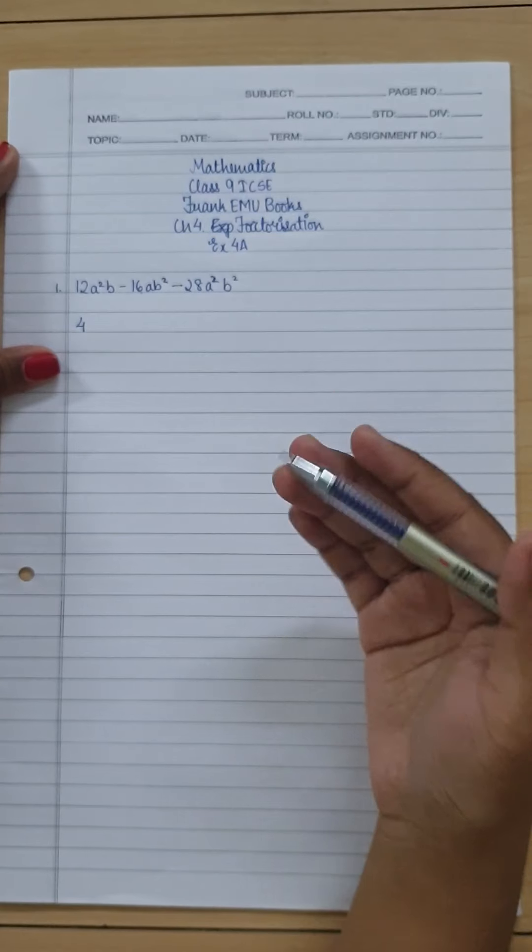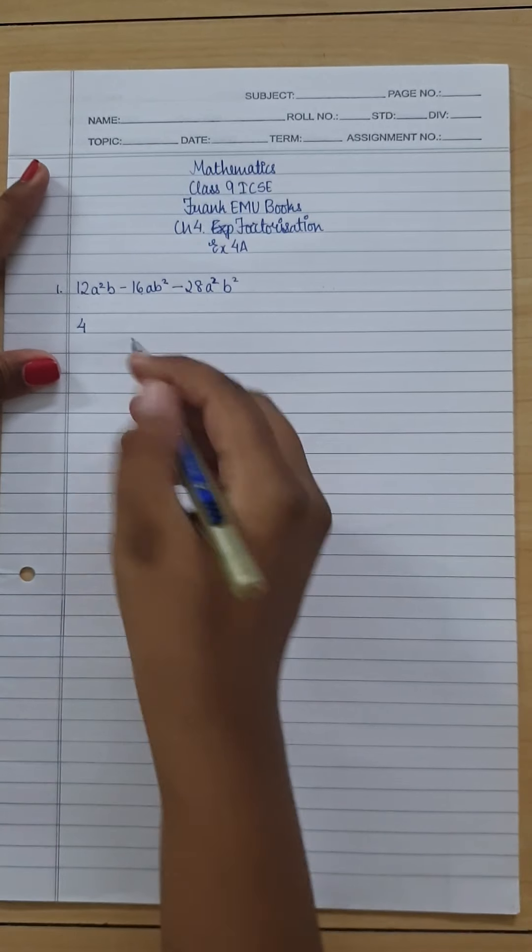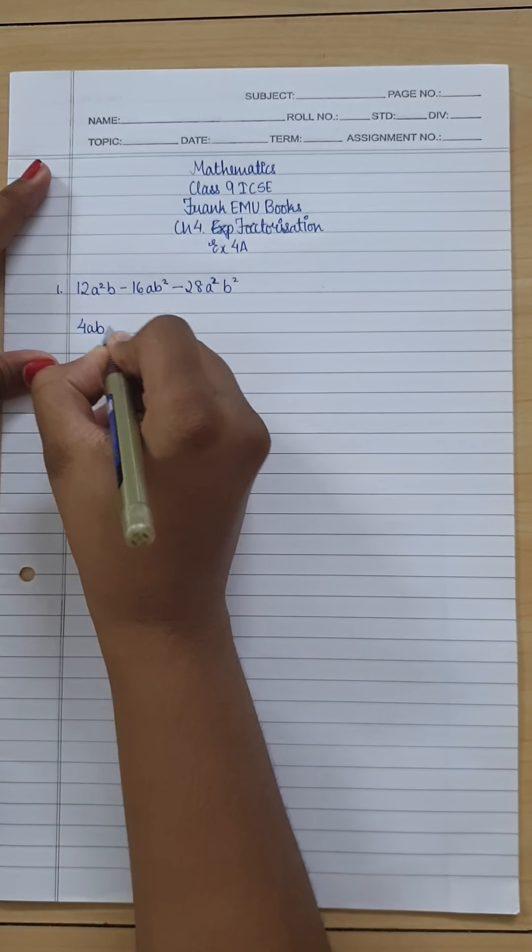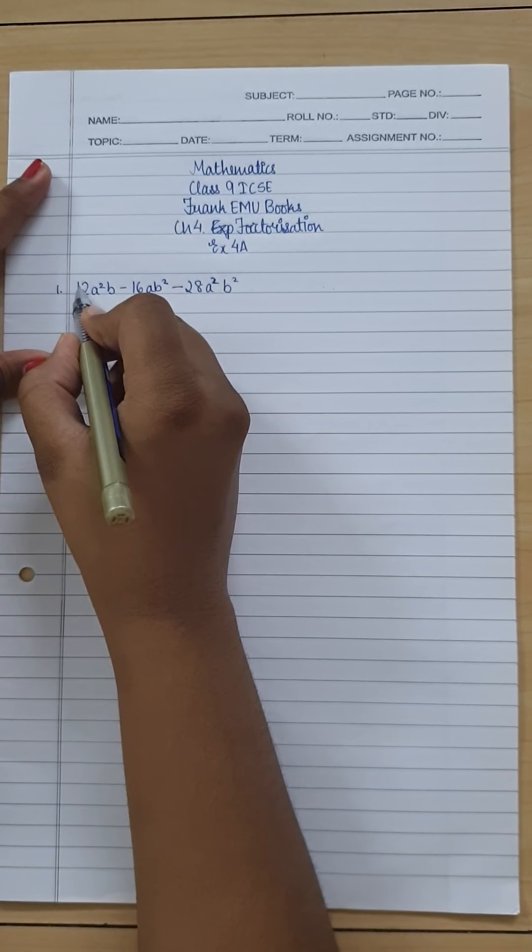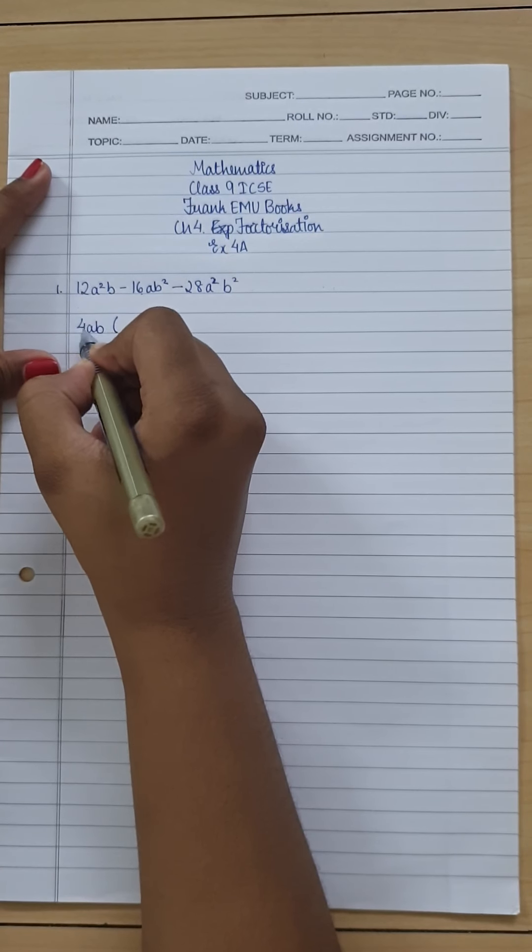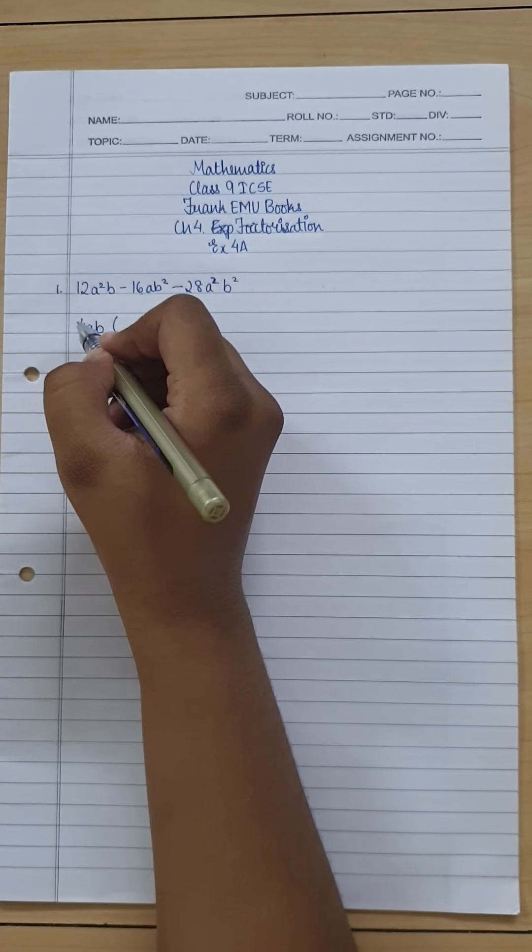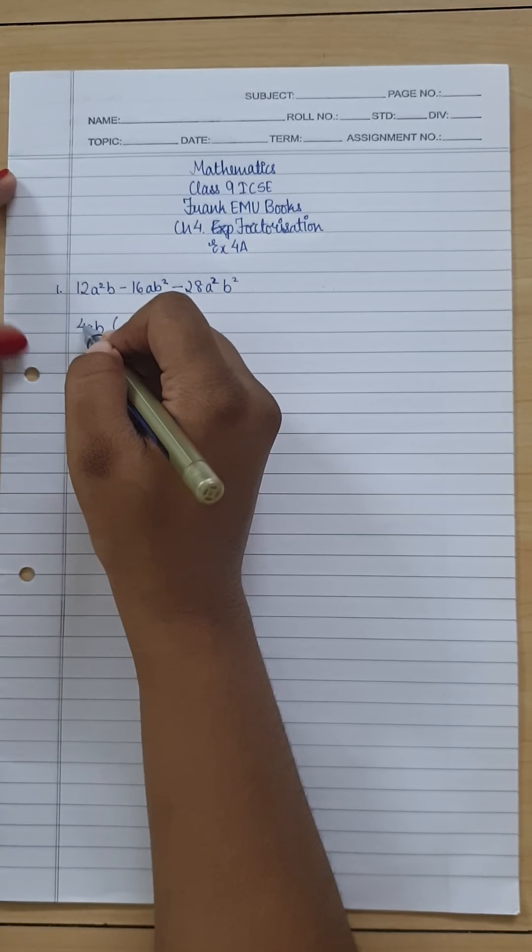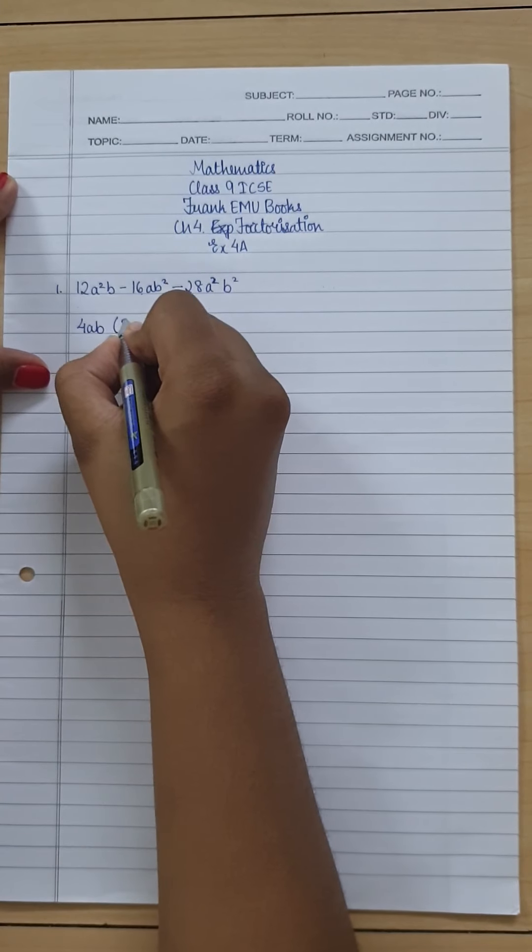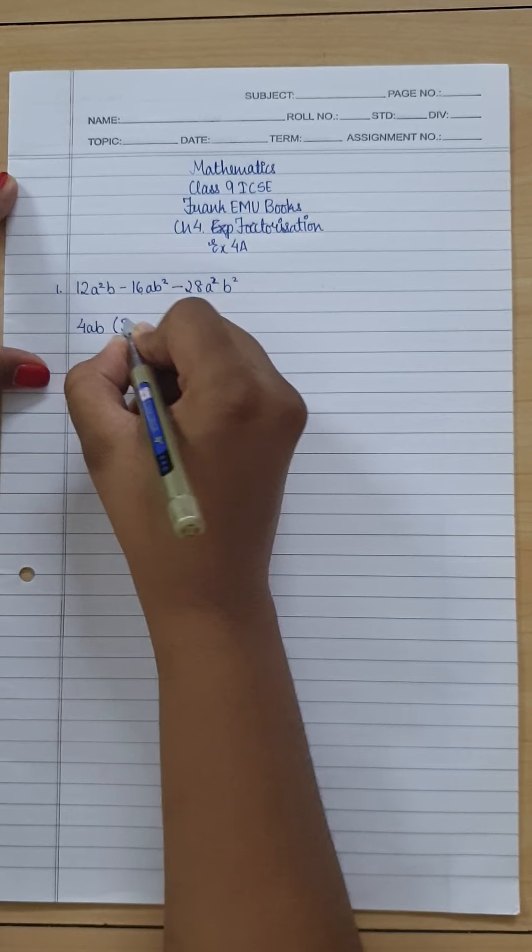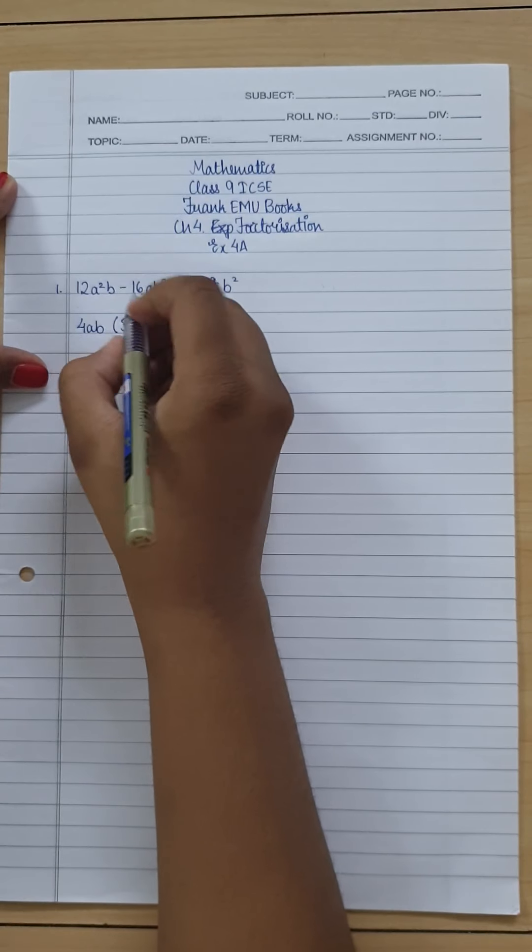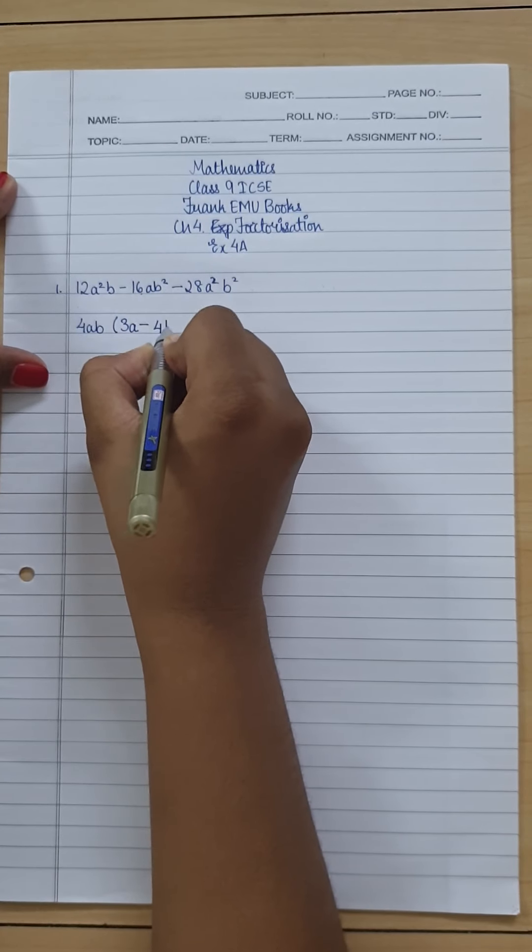And then I'll just see how many times is 4 multiplied to get 12. So it's 4×3 = 12, so I just write 3a because a² is there. Minus 4×4 is 16 and b because it's b². Minus 4×7 is 28 rather, and we are having ab because it's a²b².